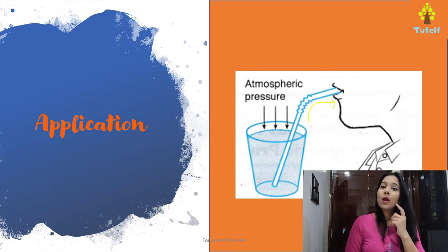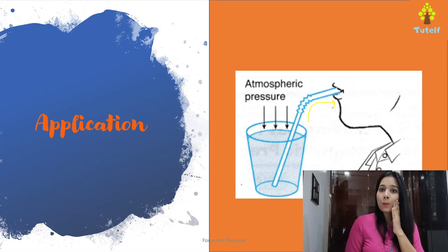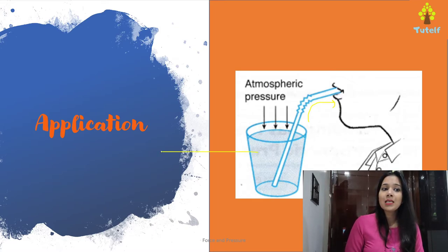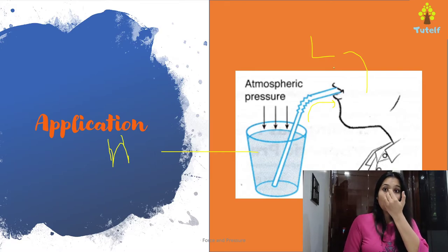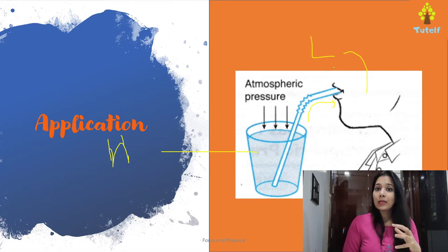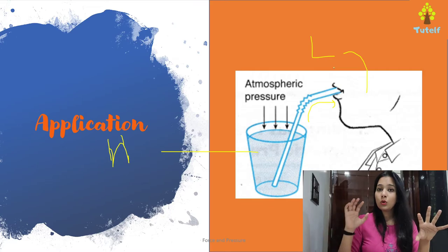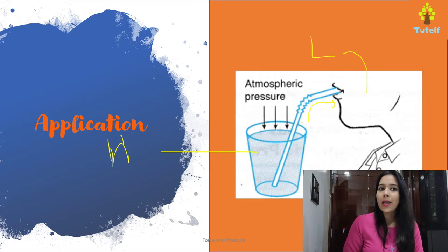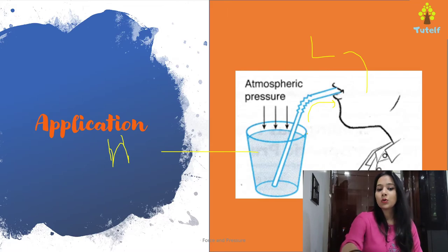When you are pulling the water, you create a low pressure inside your mouth and the water is at high pressure. The atmospheric pressure pushes the water. Since there is high pressure outside and low pressure inside your mouth, all the liquid particles go from high to low atmospheric pressure. That is why we are able to pull liquid up inside a glass through a straw.